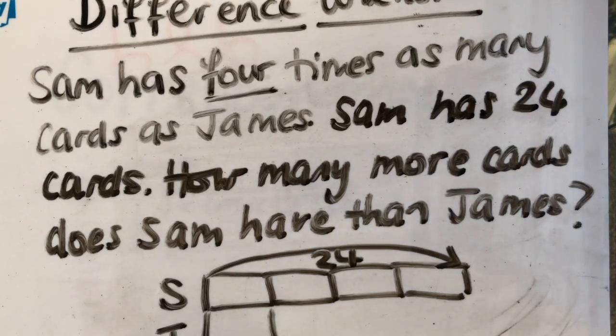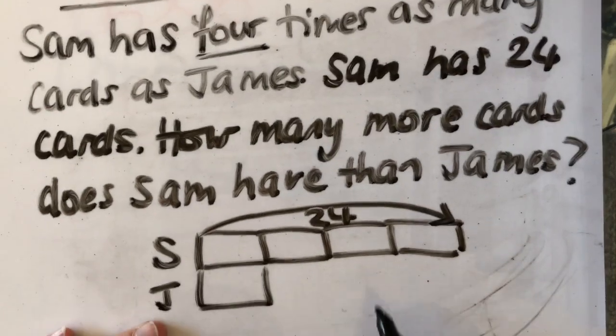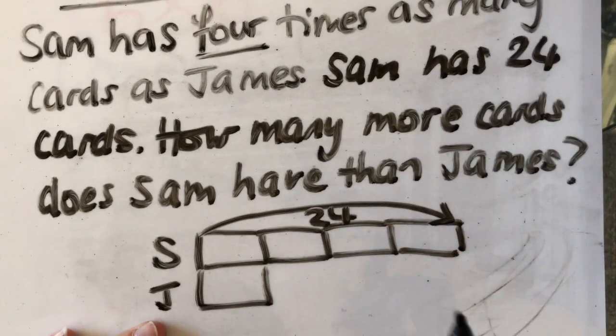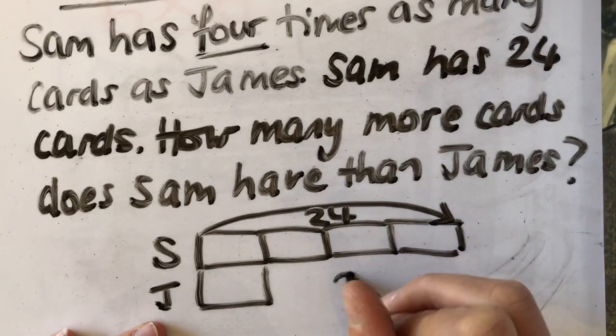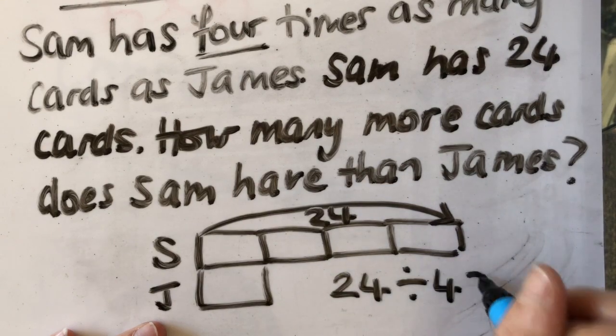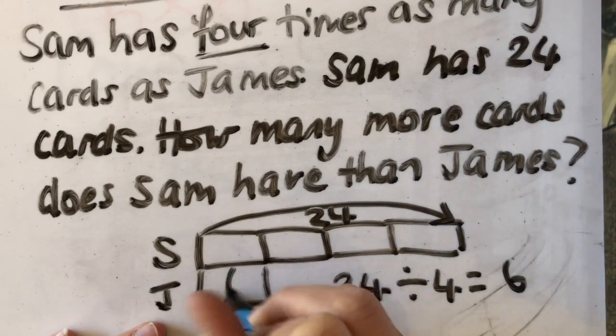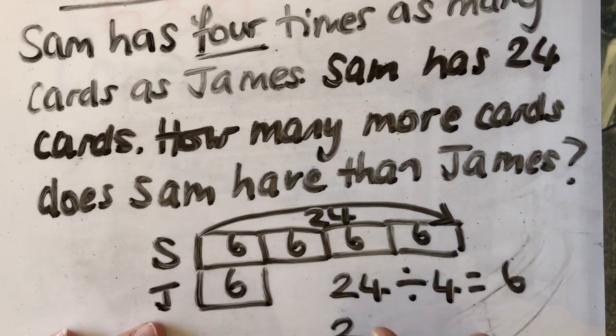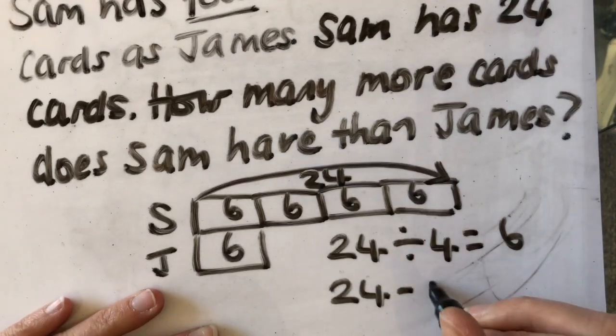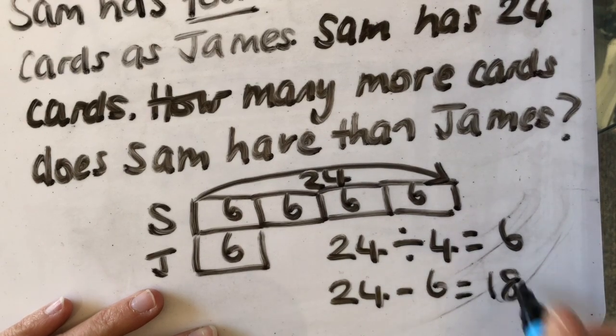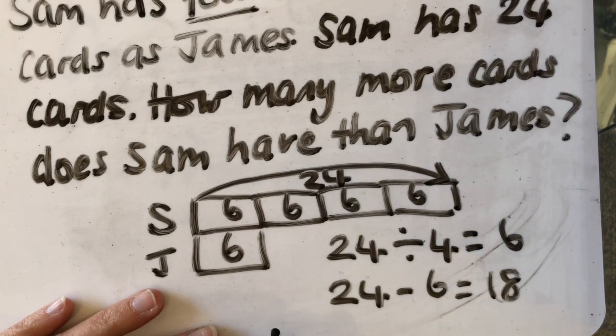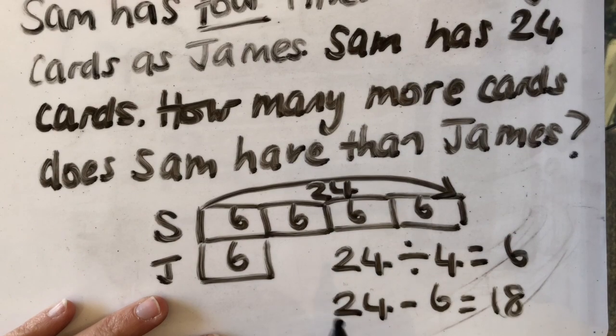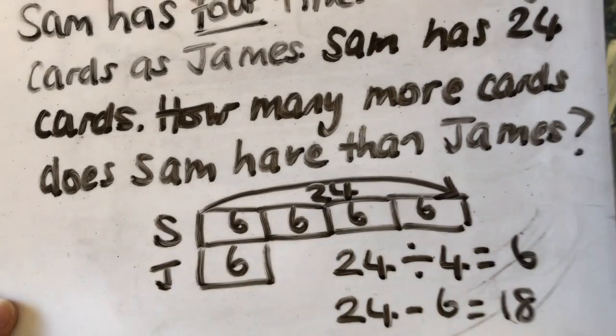How many more cards does Sam have than James? So with this one, I'm going to have to do two things. I'm going to have to do 24 divided by 4 to give me 6. And that will tell me what each of these is worth. And now, because I know that's 24 and that's 6, I can do 24 take away 6, which is going to give me 18. So it's a two-step problem, but using my bar has really helped me to do that a lot quicker.